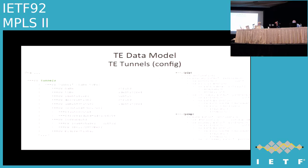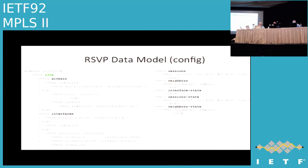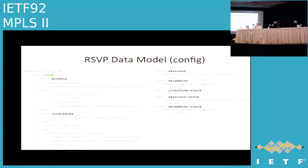Continuing in the same module, we have tunnels and their respective attributes, with two branches: point-to-point and point-to-multipoint. The RSVP base data model contains globals, interfaces, interface-specific RSVP attributes, sessions, neighbor state, sessions configuration, neighbor configuration, and state. The detailed attributes are in the draft — we encourage you to go through them and provide comments, which are always welcome.